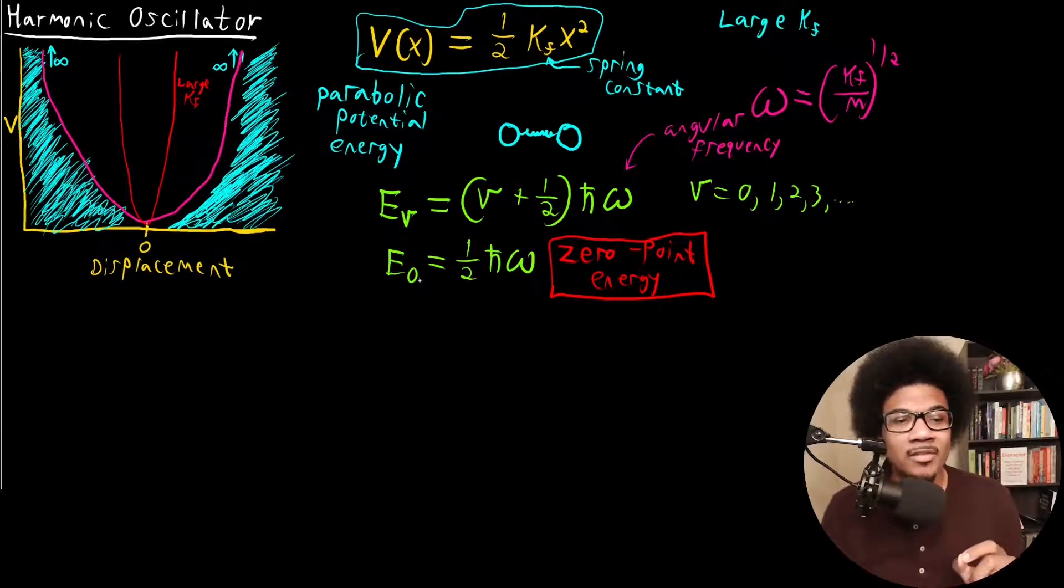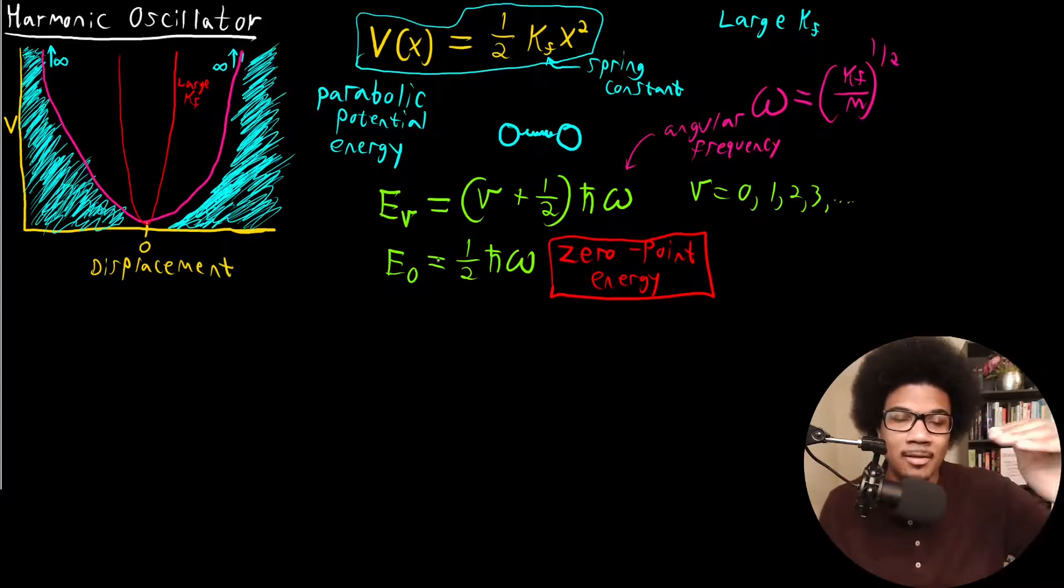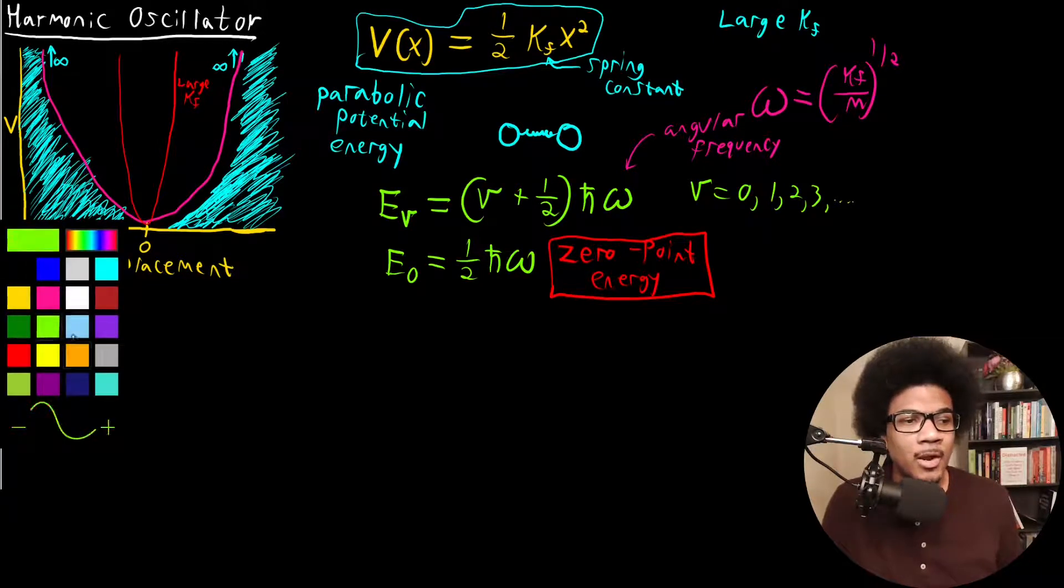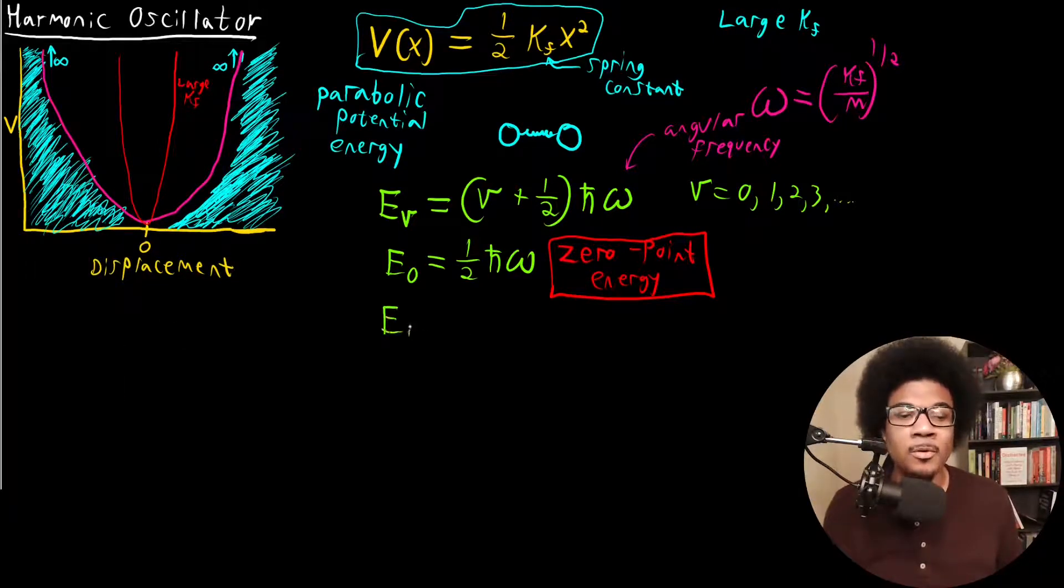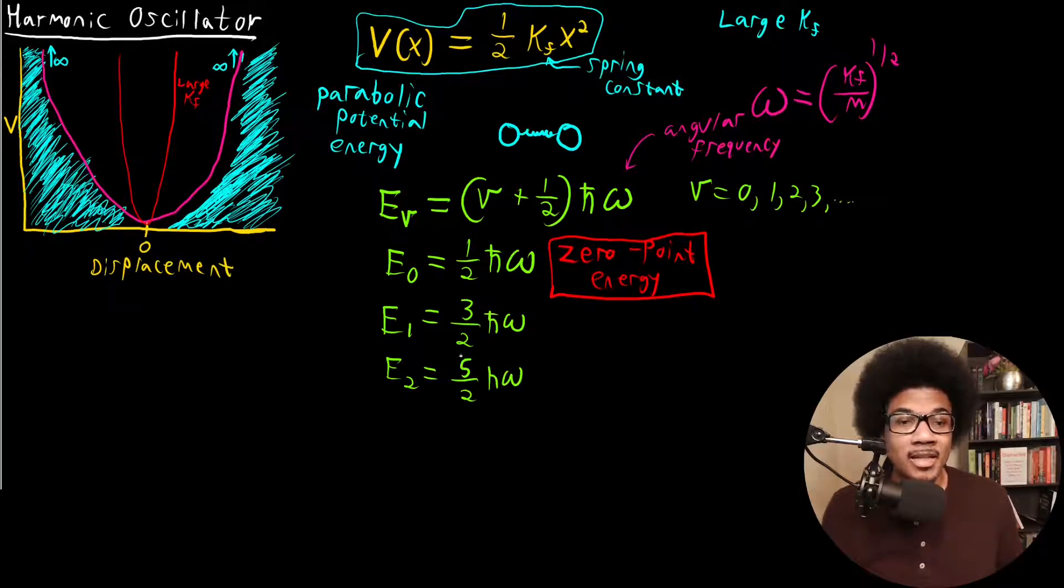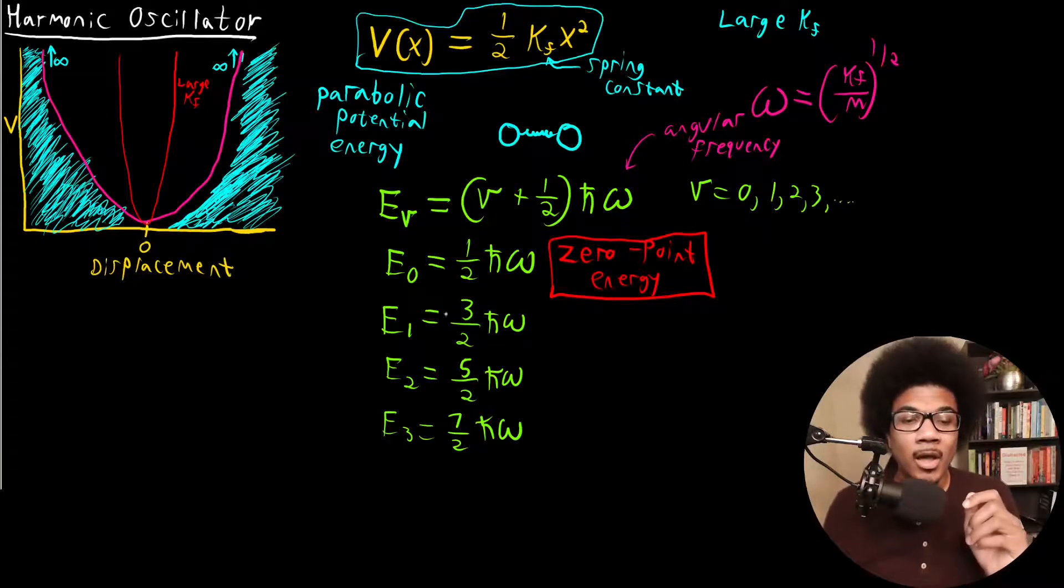And the other thing that I want to mention is about the spacing between different levels. We can go through a few numeric exercises here just to prove it to you. Let's just kind of prove it to ourselves. So let's say we had ν equal to one. That's going to give us 3/2 ℏω. E₂ would give us 5/2 ℏω. E₃ would give us 7/2 ℏω. Are you noticing a trend? Hopefully you are.